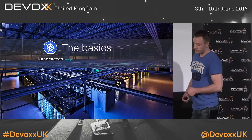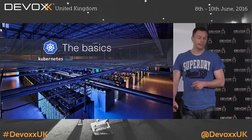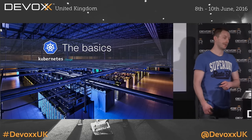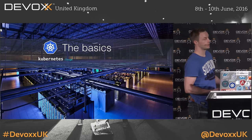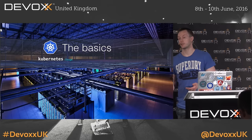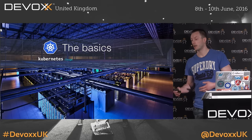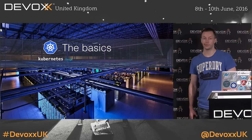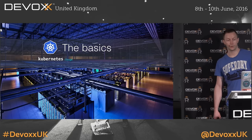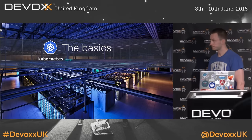We're first going to look a little bit at the basics of Kubernetes, just to get concepts straight that we have to understand before we can start looking at the API and use this API to really start automating things.